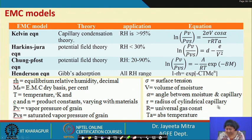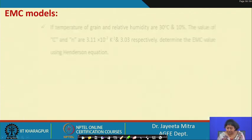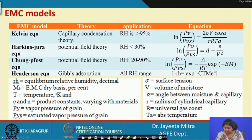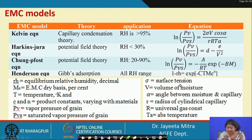Sigma is the surface tension, V is the volume of moisture, alpha is the angle between the moisture and the capillary, r is the radius of the cylindrical capillary, capital R is the universal gas constant, and TA is the absolute temperature. Using all these models, if RH is known, we can find the equilibrium moisture content at that condition, and accordingly store the product for a required relative humidity and temperature ambient.